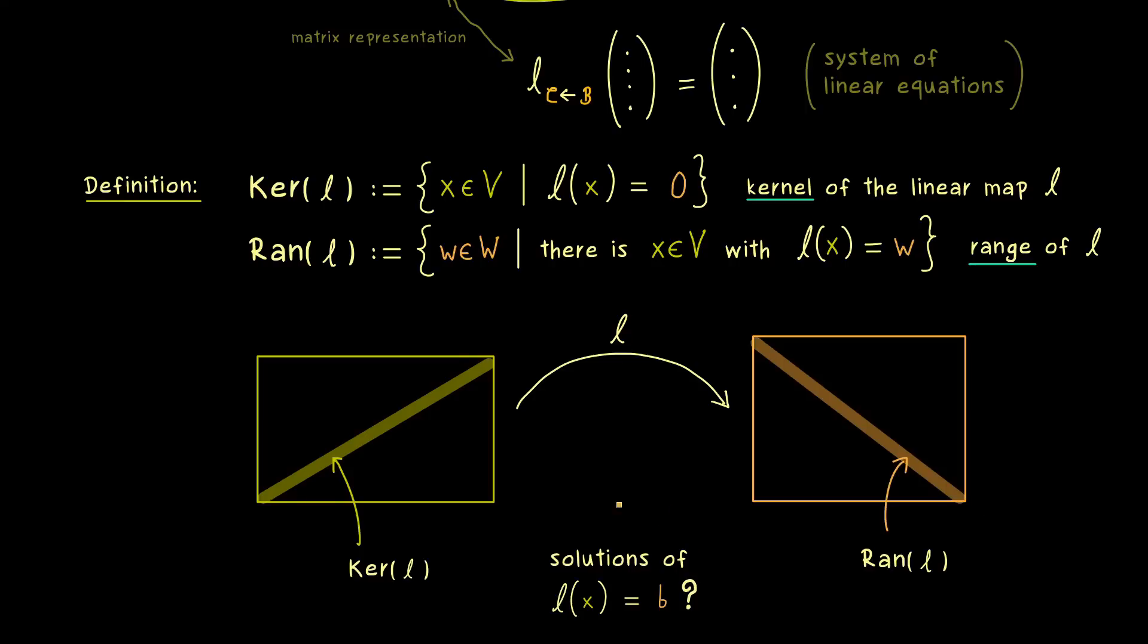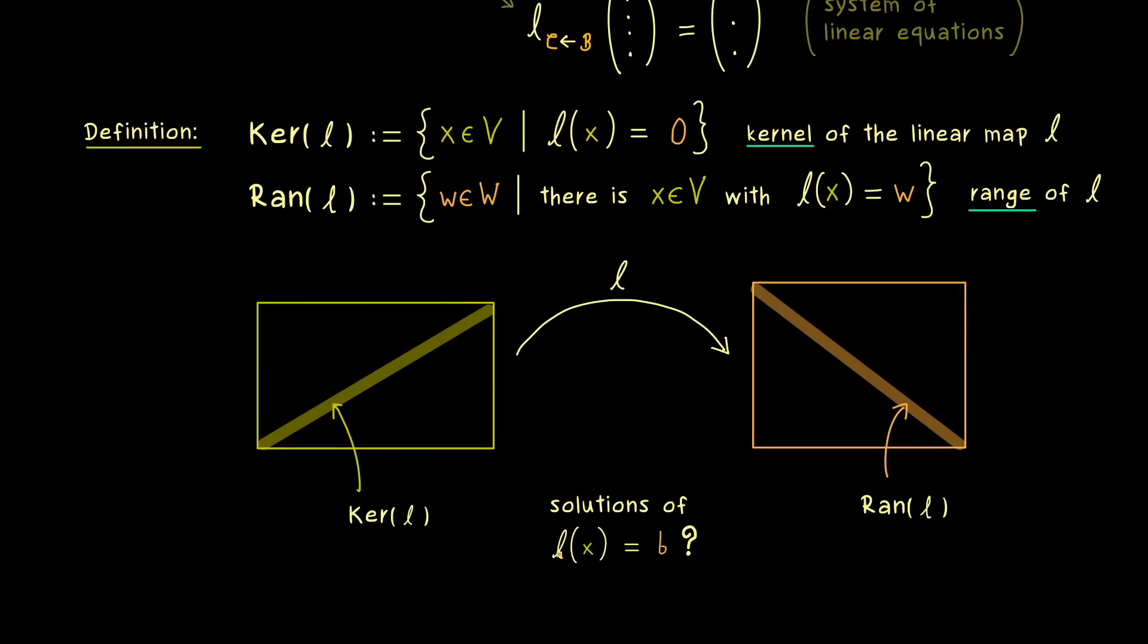So again, in this picture we can ask about solutions of the linear equation l(x) = b. Obviously, if b does not lie in the range of l on the right-hand side, then we don't have a solution at all. So please remember that knowing the range here tells us about the existence of solutions. On the other hand, uniqueness of such a solution we can only have if the kernel is trivial. More precisely, this means if the kernel contains more than just the zero vector, then we cannot have uniqueness of solutions.